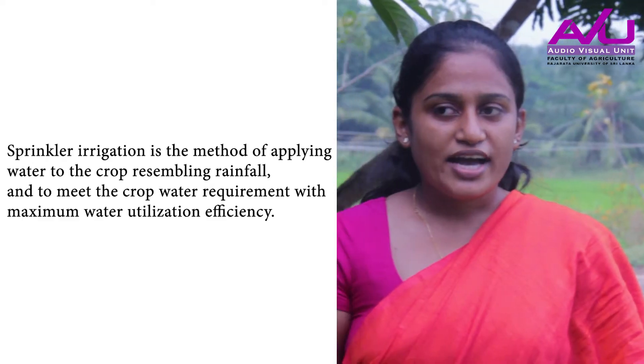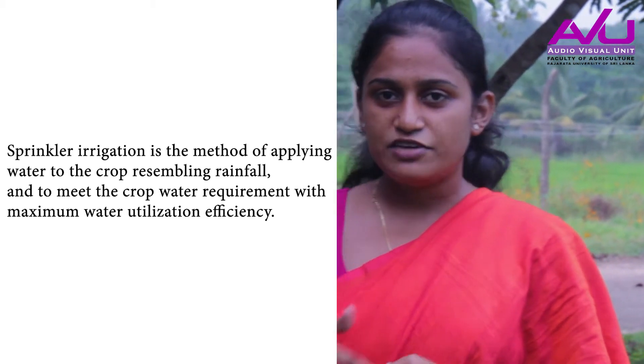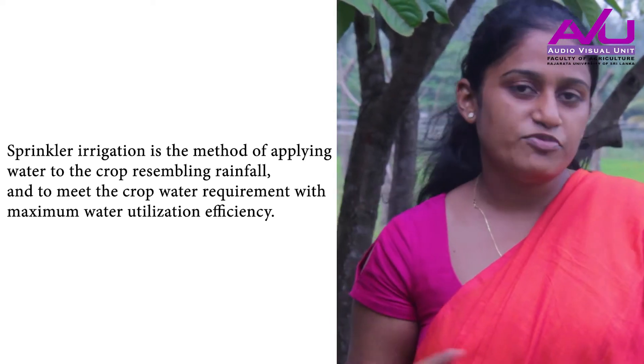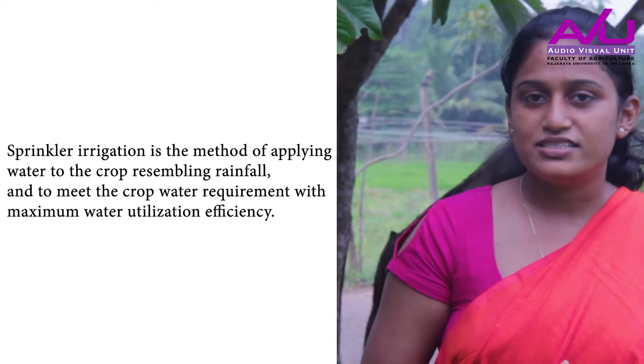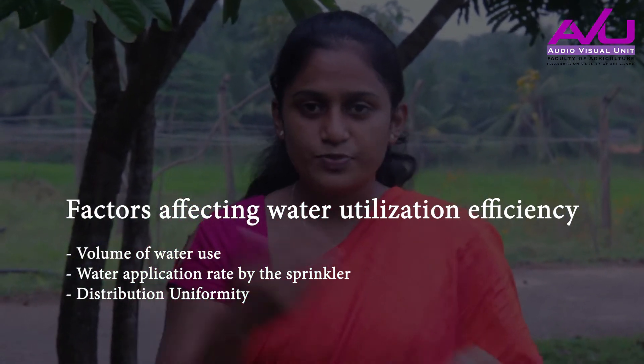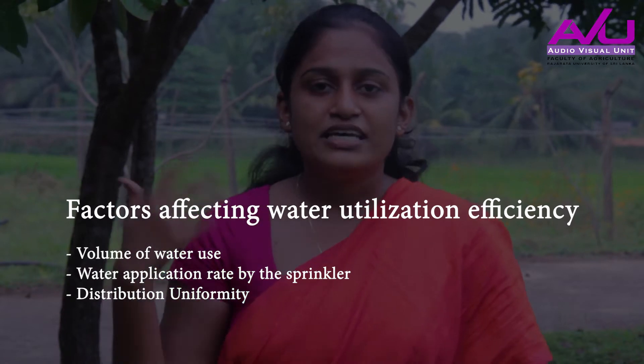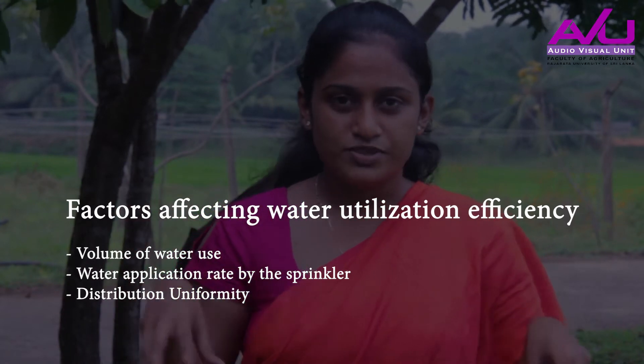Before moving into the practical procedure, let me give you a brief introduction about the sprinkler irrigation system. In this irrigation system, we are supplying water to the crops in the form of rainfall to meet the crop water requirements with maximum water utilization efficiency. This depends on several factors: how much water we are supplying, the rate of operation of the sprinklers, and the distribution uniformity — that is, how uniformly the water has been distributed within the crops.